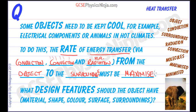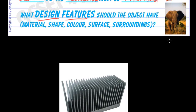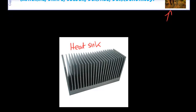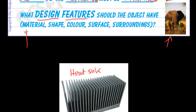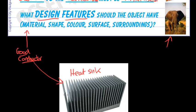We've got to get rid of that heat energy in order for the object to stay cool. What design features should the object have? This could be, for example, an elephant that needs to stay cool in the hot African sunshine, or even an electrical heat sink — a heat sink designed to take heat away from an electrical circuit board underneath it. The material must be a good conductor, so that heat will travel quickly through it. In an elephant, we need to get the heat from the center to the surface — to its skin — so it can lose heat via radiation and convection, done by the elephant's blood supply. For objects, we need them to be a good conductor, such as this heat sink, which is made of metal — a very good conductor.